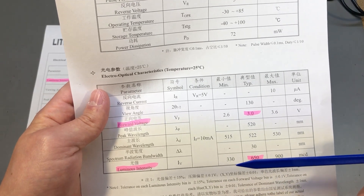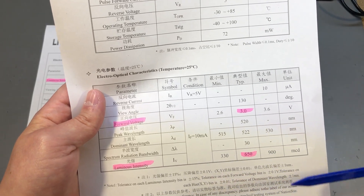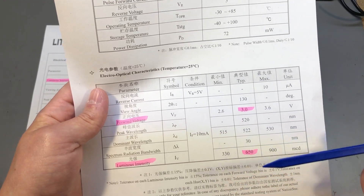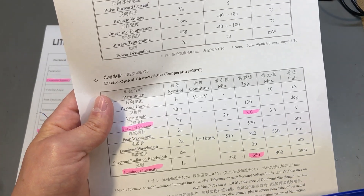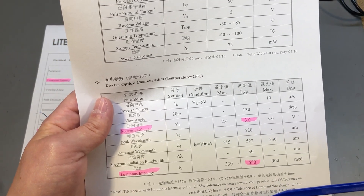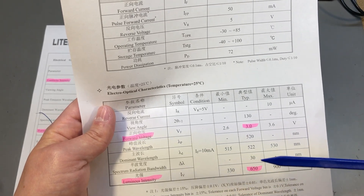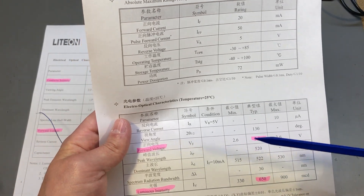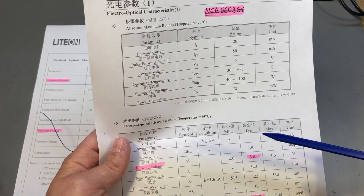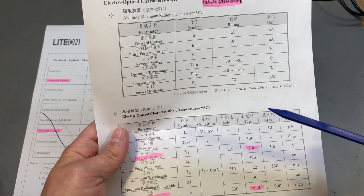A quick note: if you find different ratings in a data sheet, it's because the manufacturer tests these LEDs and bins them according to the results. They will sell the best LEDs slightly more expensive because they have better specs.